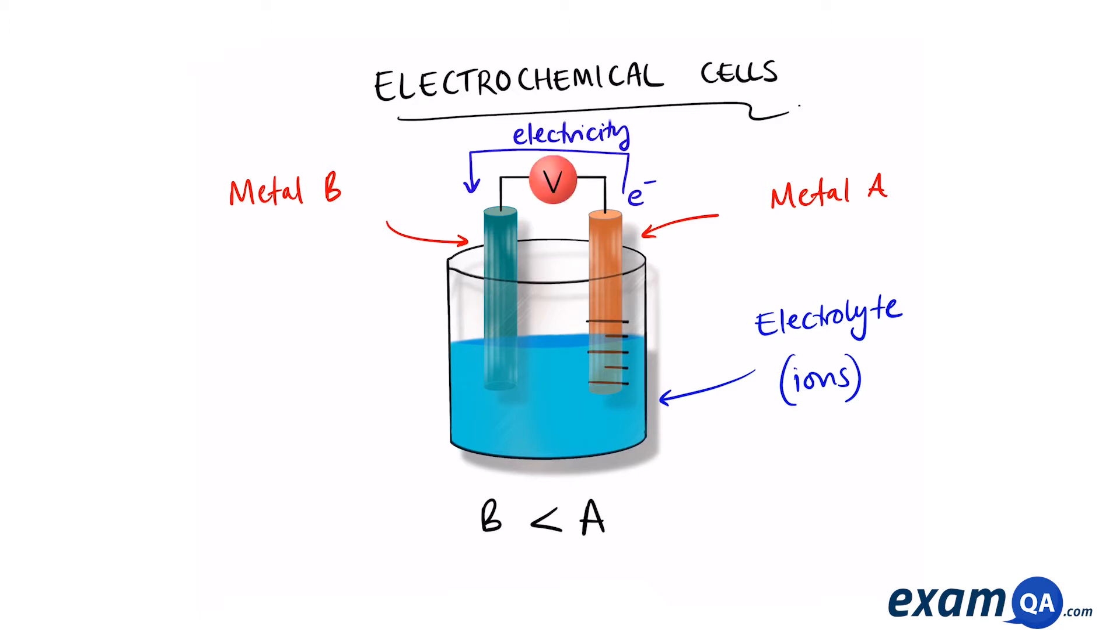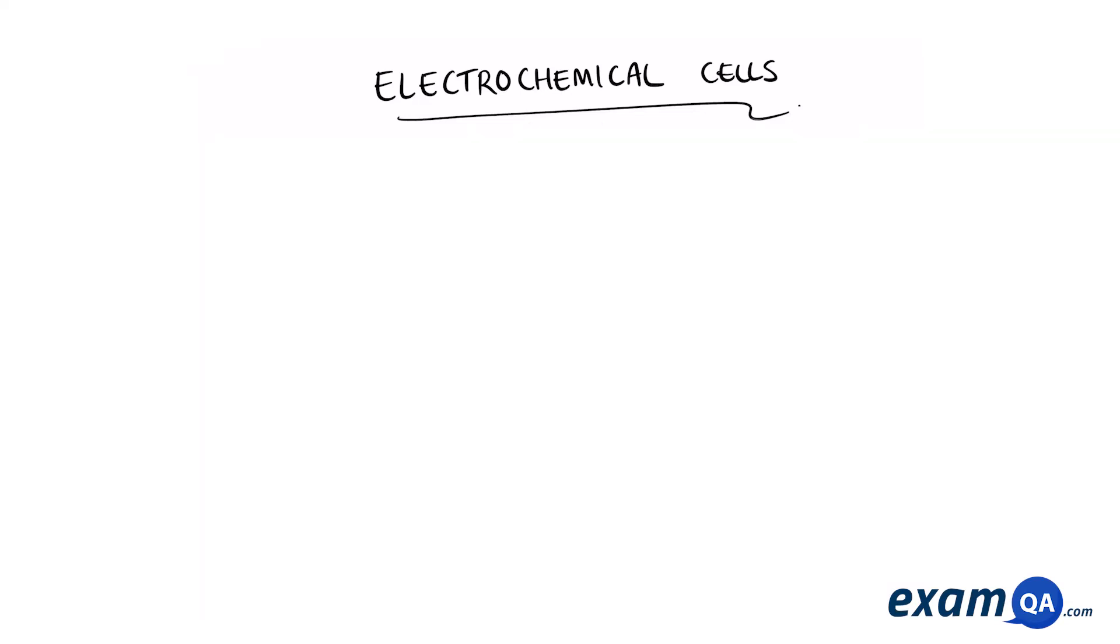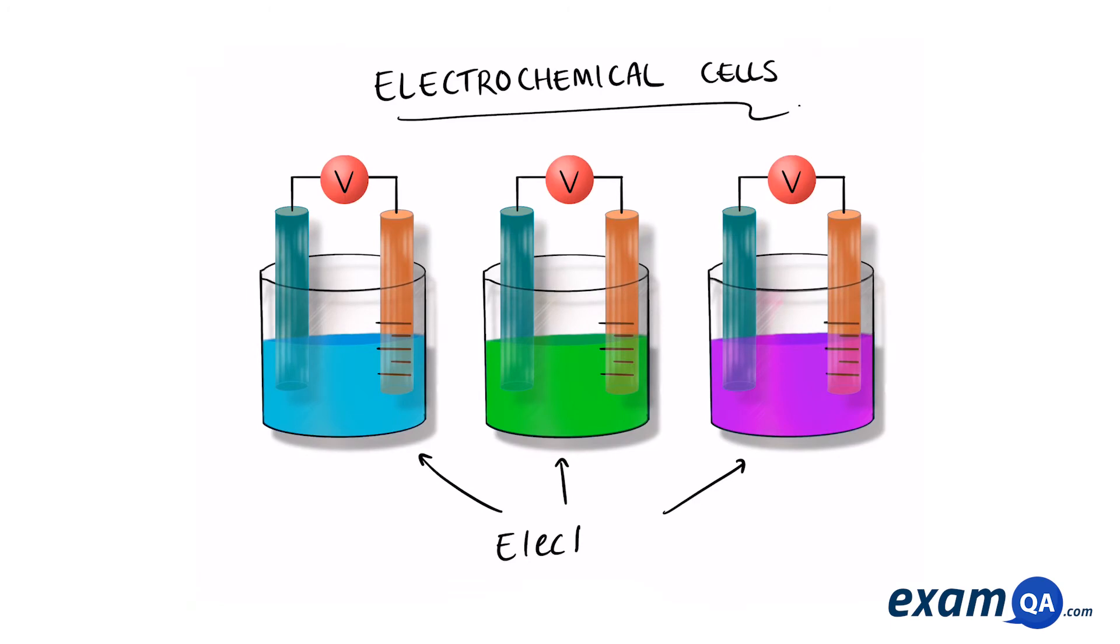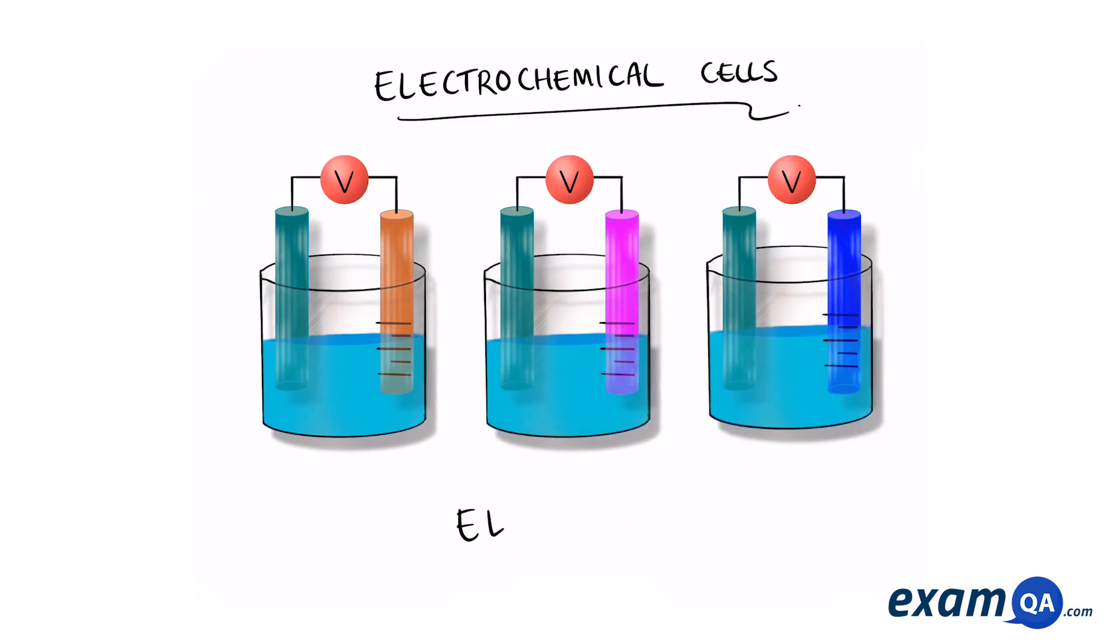We can connect a voltmeter between the electrodes to measure the voltage. Changing the electrolyte can affect the voltage, or changing the type of electrodes. So you can actually get many different combinations of electrolytes and electrodes which all produce different amounts of voltages. The bigger the difference between the reactivity of the electrodes, the larger the voltage produced.